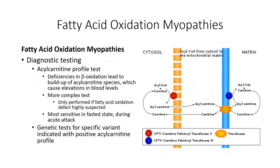The first step in diagnosing a metabolic myopathy will always be the forearm exercise test described in the previous segment, even if the patient presentation is more in line with an error in lipid metabolism. It's a simple and inexpensive test which is highly effective in ruling in or out glycogen storage diseases. If the test comes back negative, with normal elevations in blood lactate post-exercise, more complex tests for fatty acid oxidation diseases can be performed.